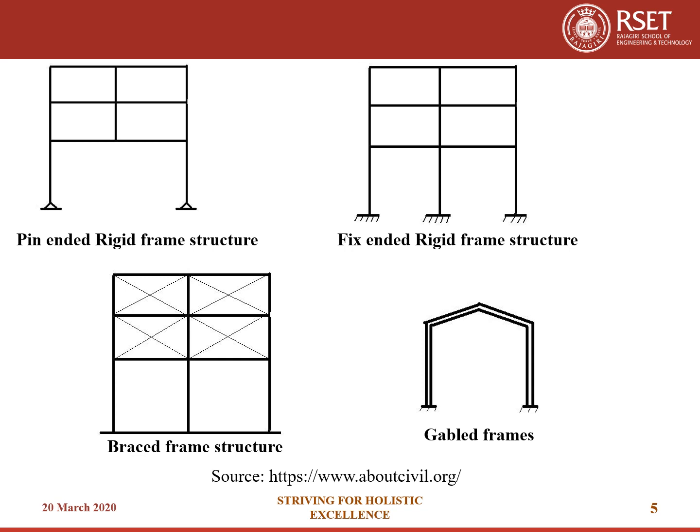The figure shows different types of framed structures. Rigid frame structures can be defined as structures in which beams and columns are made monolithically and act together to resist the moments generated due to the applied load. This type of frame structure resists shear, moment and torsion more effectively than any other type of frame structure.